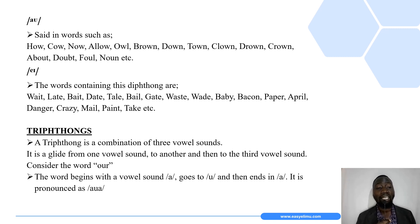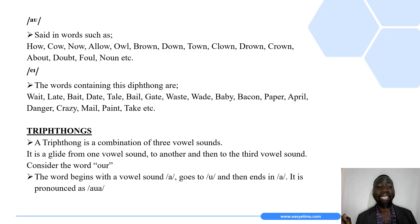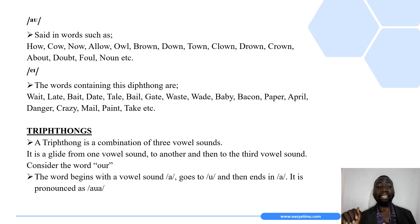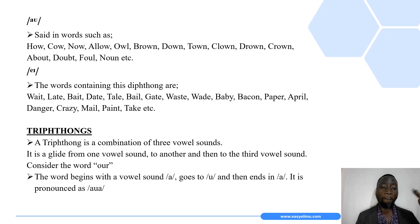We also have diphthongs that have the two vowel sounds /eɪ/. The words containing these diphthongs include weight, late, bait, date, tail, bail, gate, waste, wade, baby, bacon, paper, April, danger, crazy, mail, paint, and take — and so on. Again, the list is endless; these are just examples.